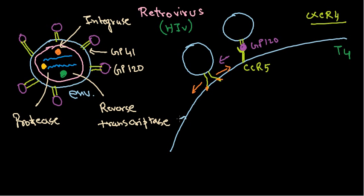GP41 then pulls from both sides so that the virion particle fuses with the host cell membrane. Once fused, all the necessary materials — the genetic material and all the protein molecules and enzymes — are released inside the cytoplasm.